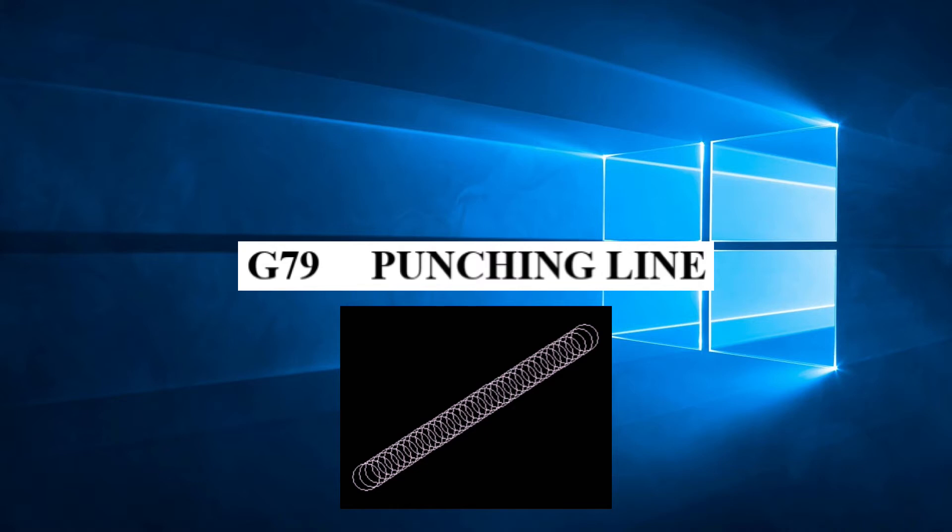We can define G79 as follows. Starting from either the current position or a point designated by G72, a line of length I is punched using a punch of diameter P at a pitch Q with an angle J in relation to the X-axis.